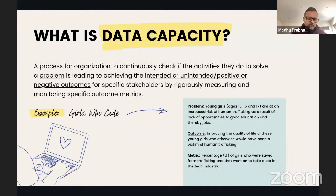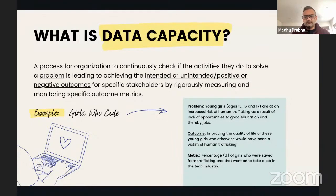Even before we address the myths, let's define data capacity. IMM and data capacity are synonymous terminologies for us — we're not looking at them from two different angles. Data capacity is the ability to measure the activities your organization does to solve a problem for a stakeholder, leading to certain outcomes you're working towards.